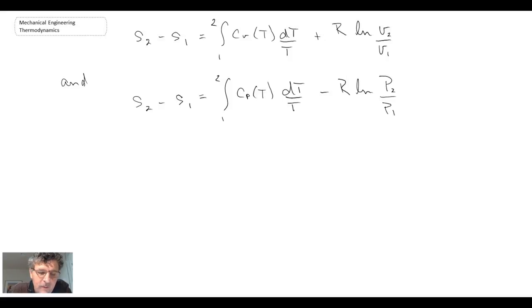So there we have two relationships for the change in entropy between two different end states. And you'll notice that we have a couple of terms in both of the equations that involve the specific heats as a function of temperature. And so in order to integrate or evaluate those integrals, we either need to know specifically how the specific heats themselves change with temperature and then put that in and integrate.